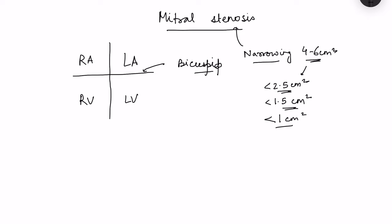At severe mitral stenosis, the breathlessness or dyspnea is not present at rest but with exertion — dyspnea with exertion. However, when the orifice is less than 1 centimeter square, there is dyspnea even at rest. That is why it is called critical mitral stenosis.